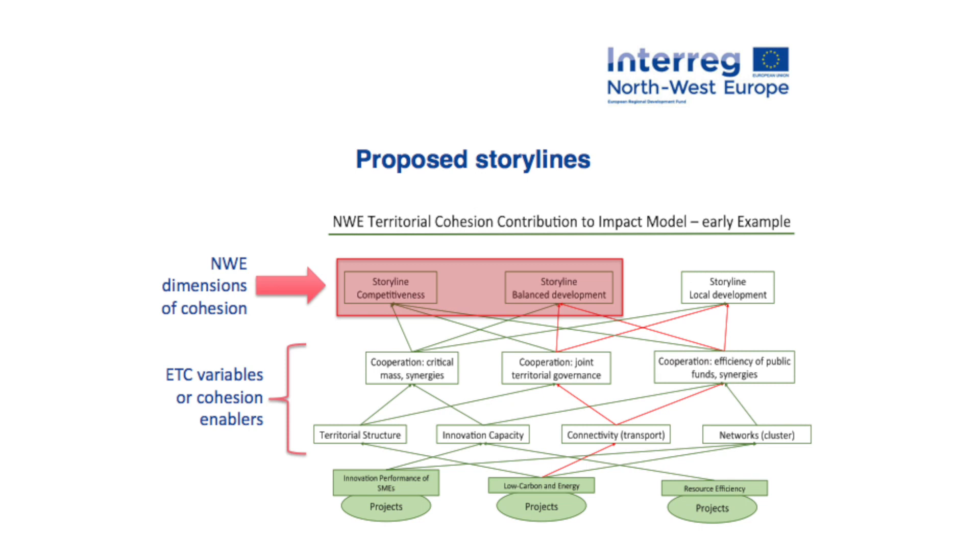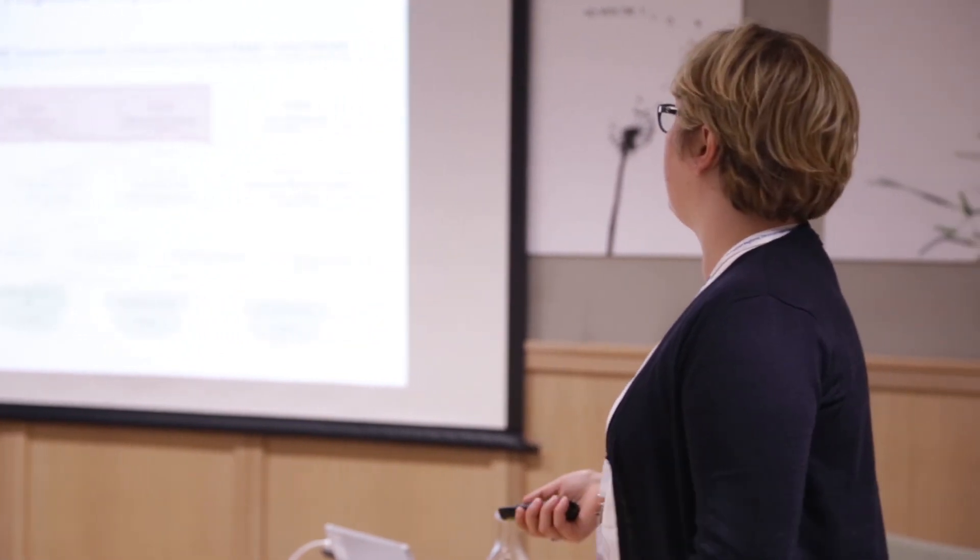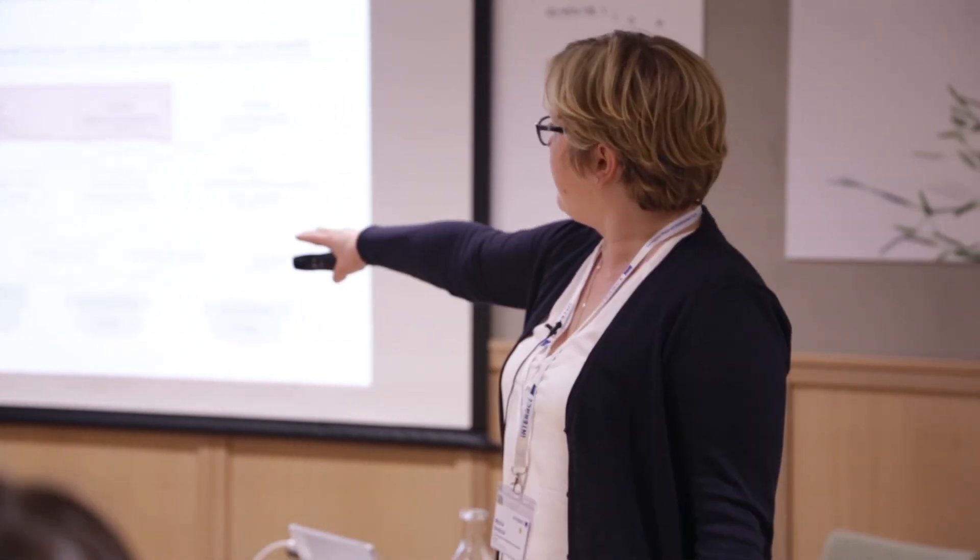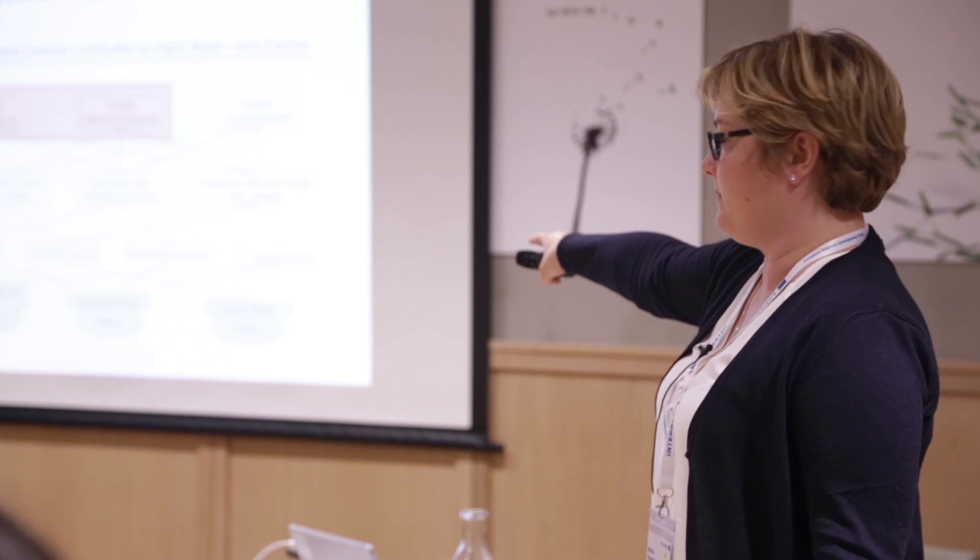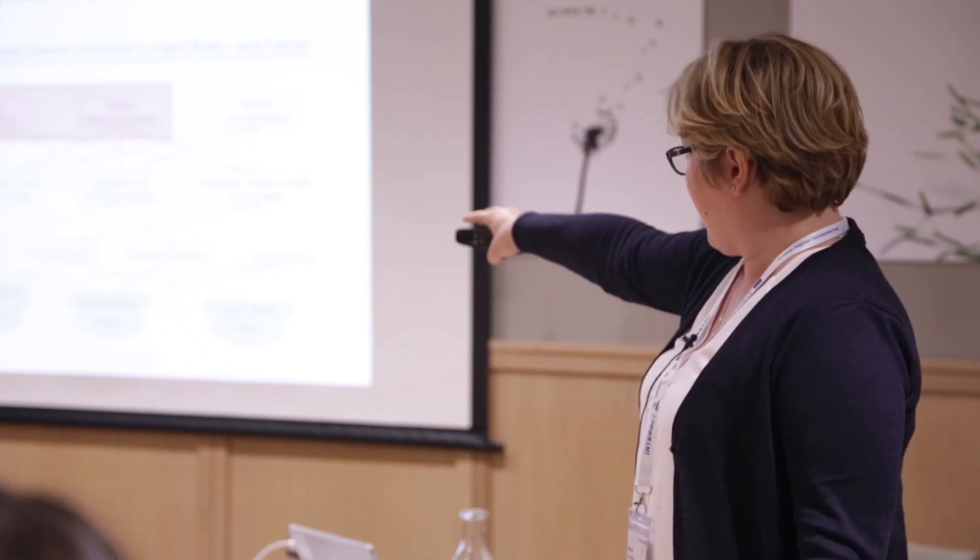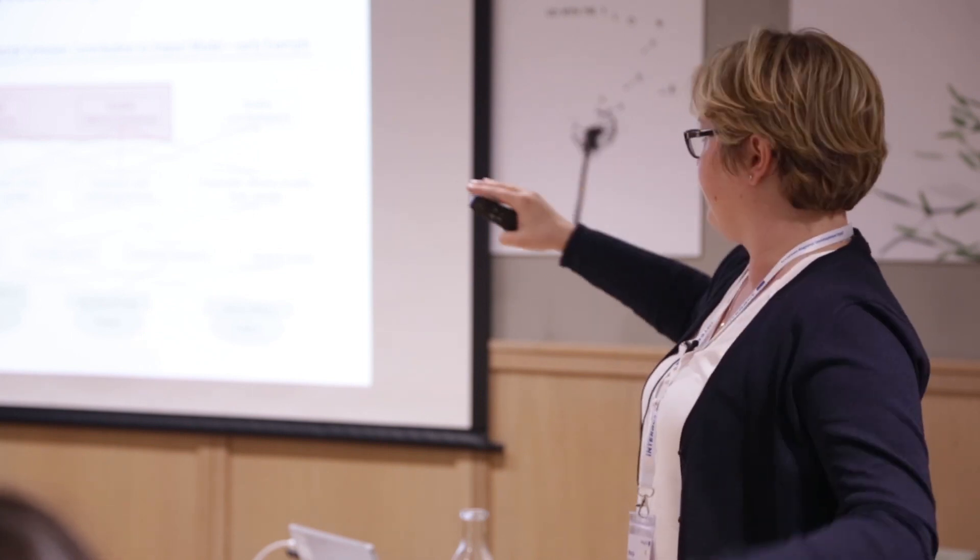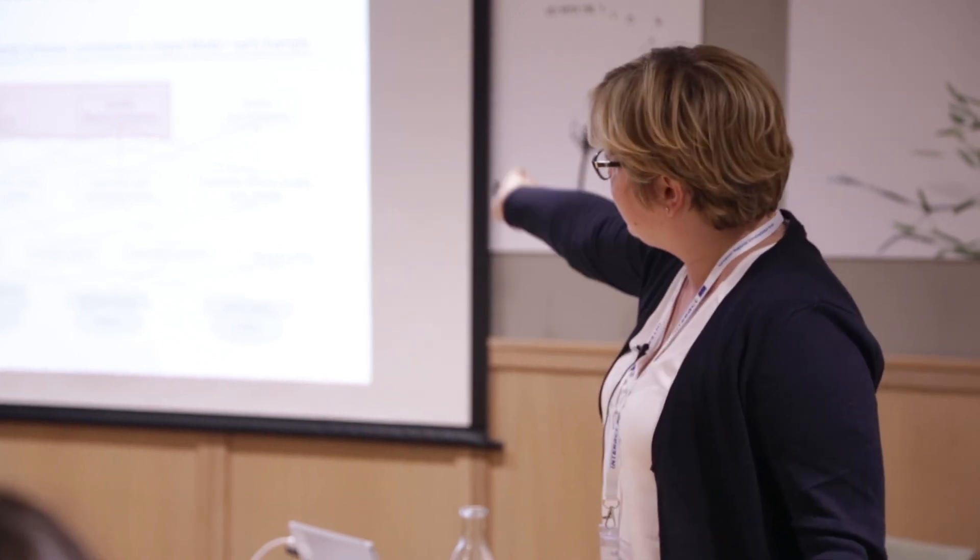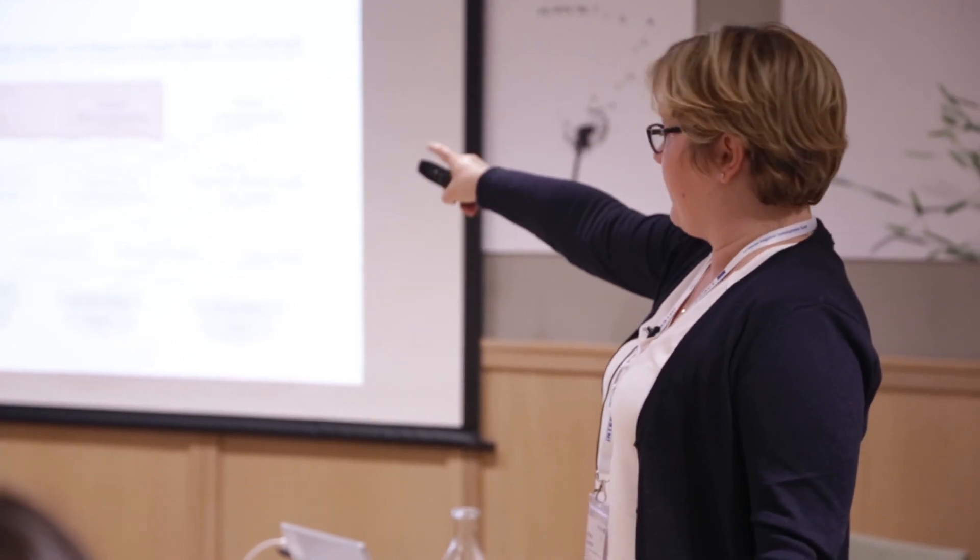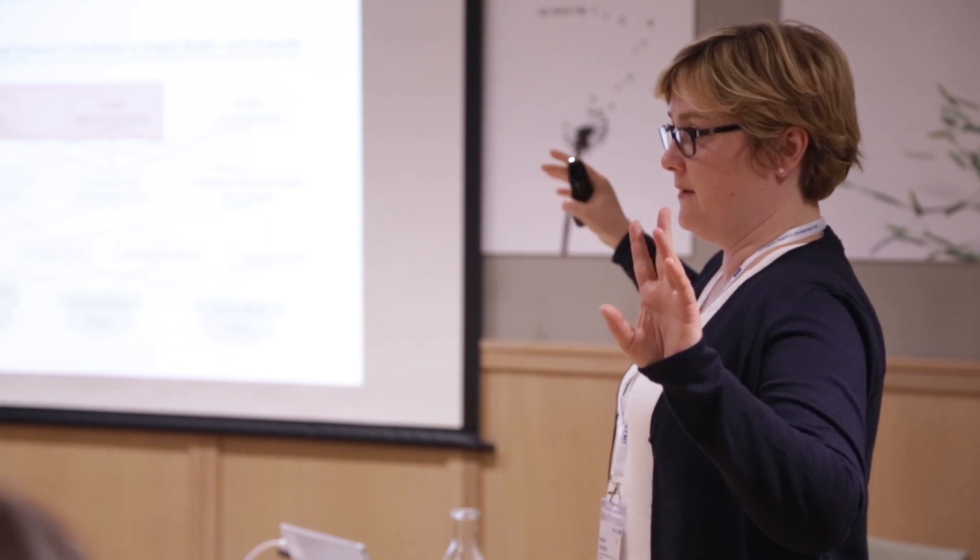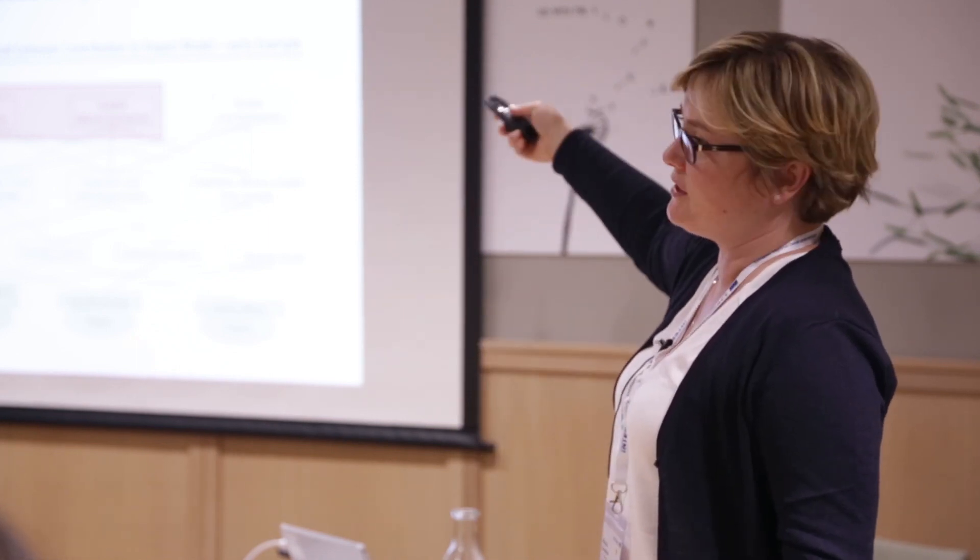Just to present you the whole idea in some kind of graph so that you know how it's going to work: At the very bottom, we have the three priorities of the program. At the very top, we have the storylines, so those three dimensions that our MC focused on. And in the middle, we have what I like to call ETC variables or some kind of cohesion enablers that we bring with our programs to actually create the bridge between the two. So this is currently what we're looking at.